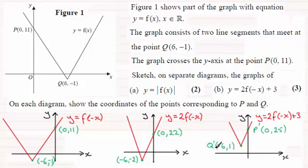So it's going to look something like this. So I've put in the new points then for P and Q. The new point for P is 0,25 and the new point for Q is minus 6, 1. Okay?